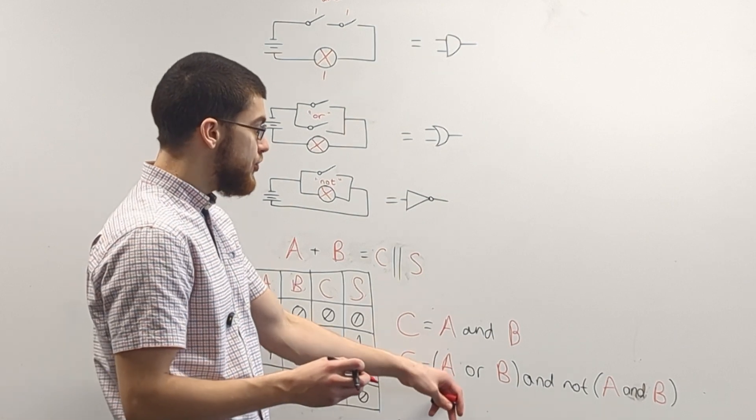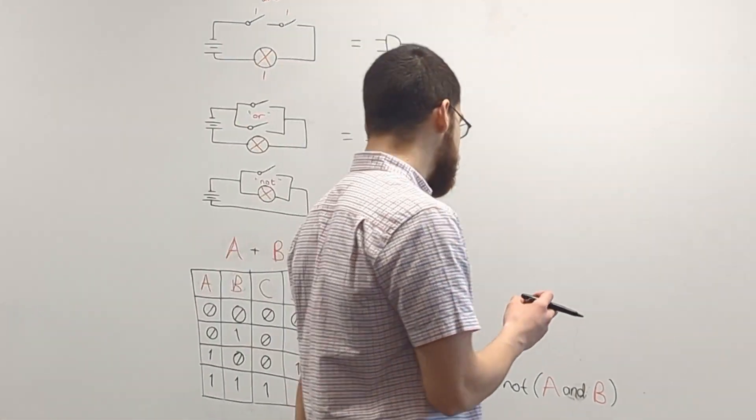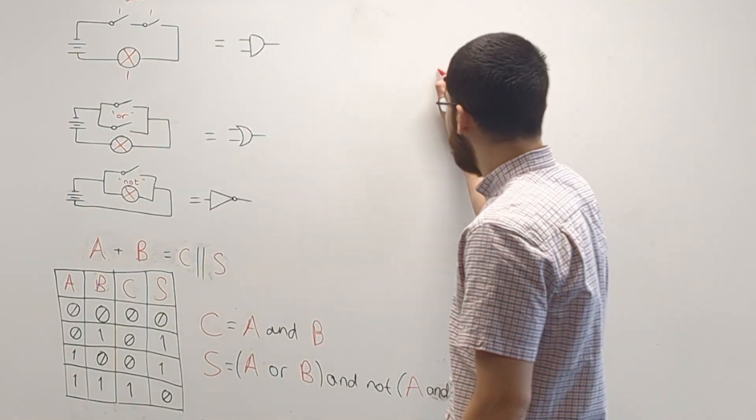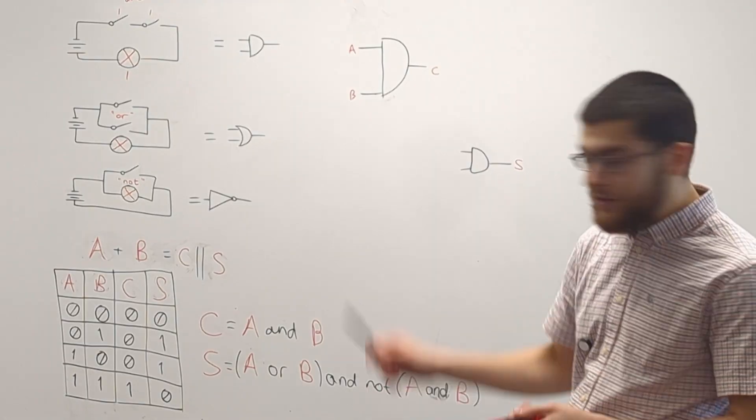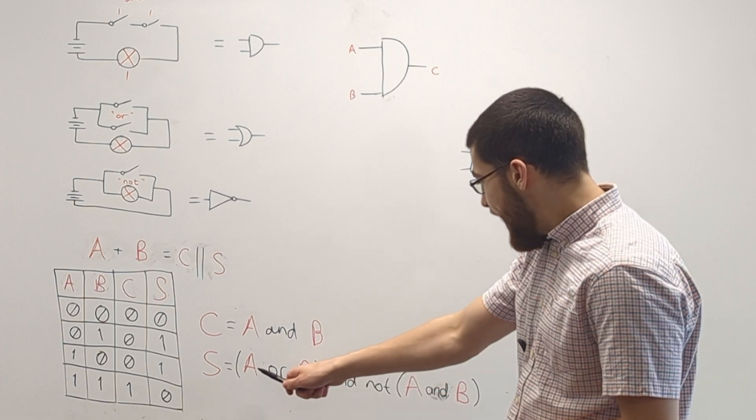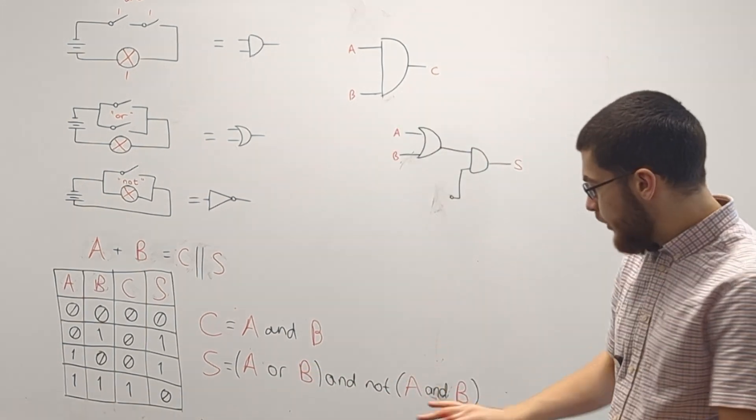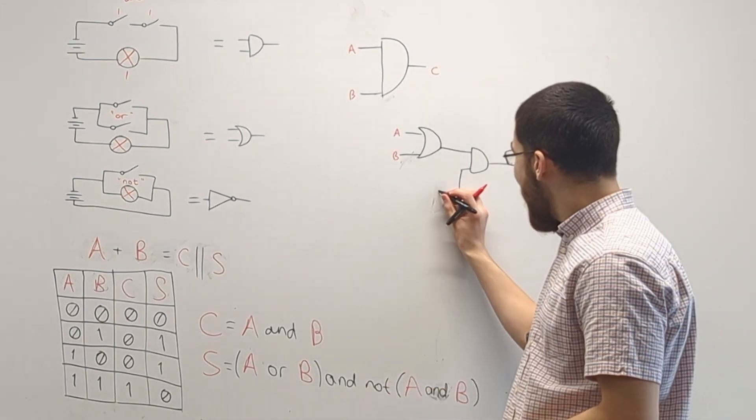So to turn these into circuits, we just need to use these logic gates instead of using words. So C is easy, because C is just A and B. But for S, we need this and gate here, and we want an A or a B. And then we want a not gate, and then an A and a B.